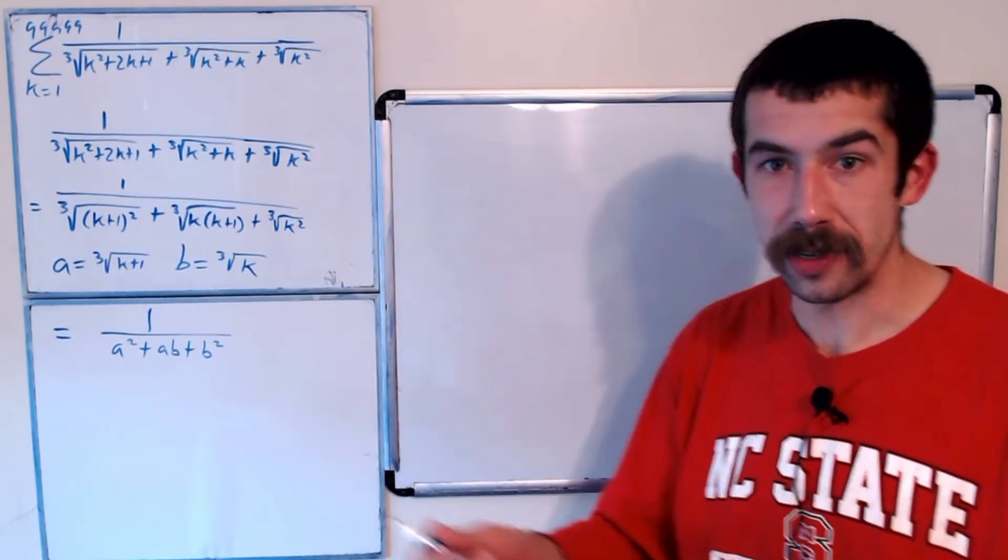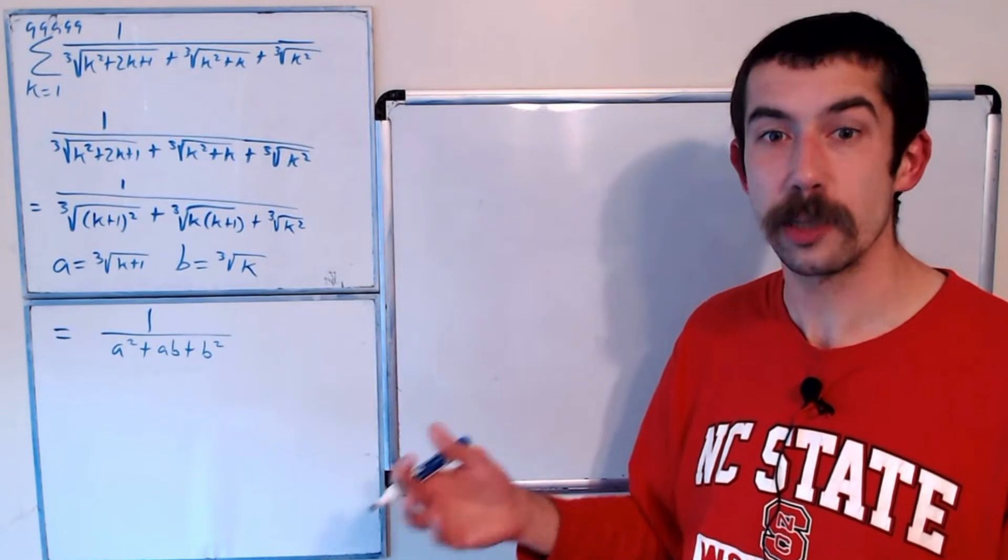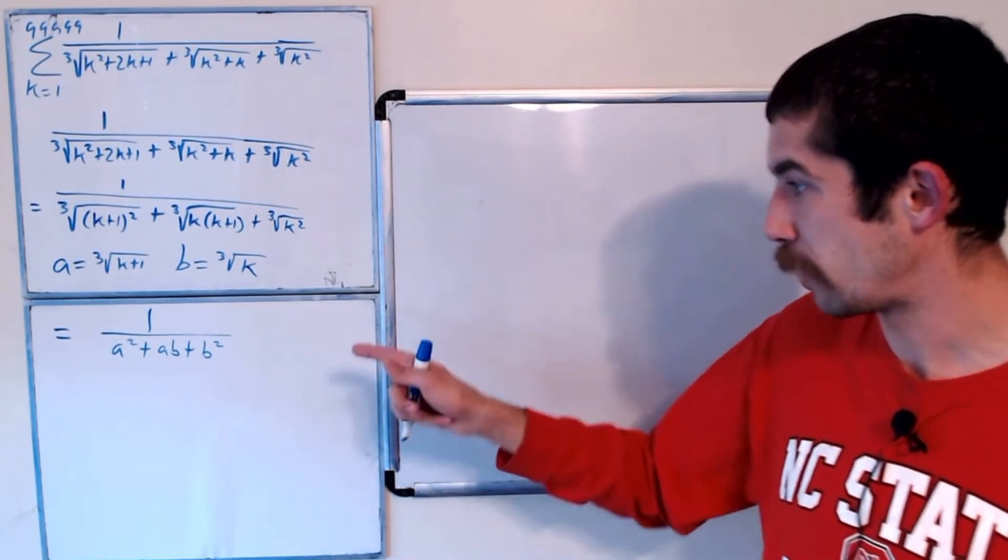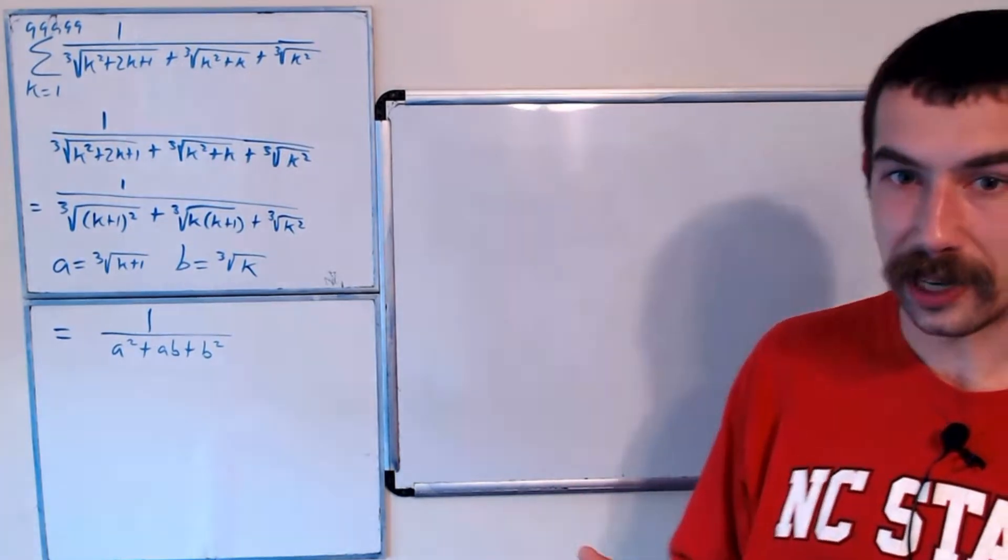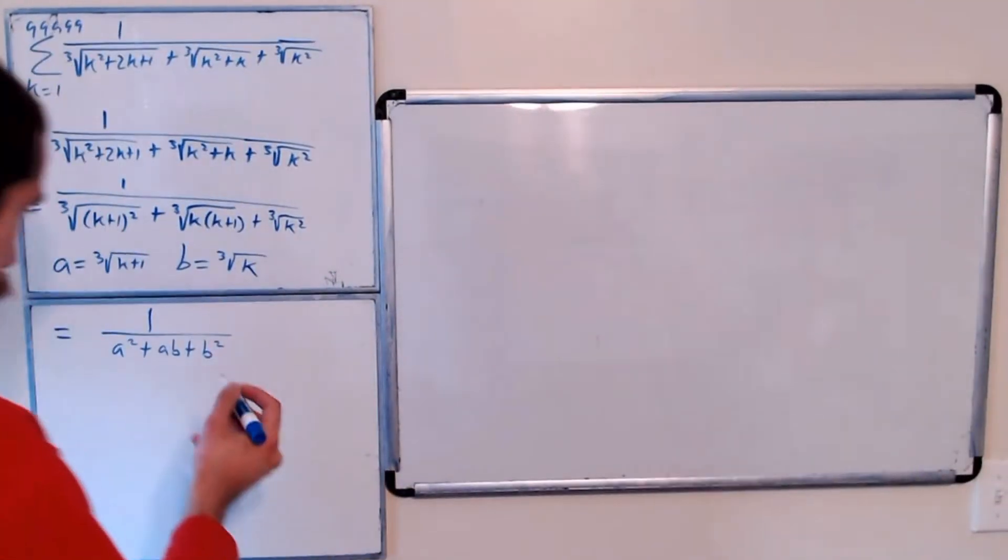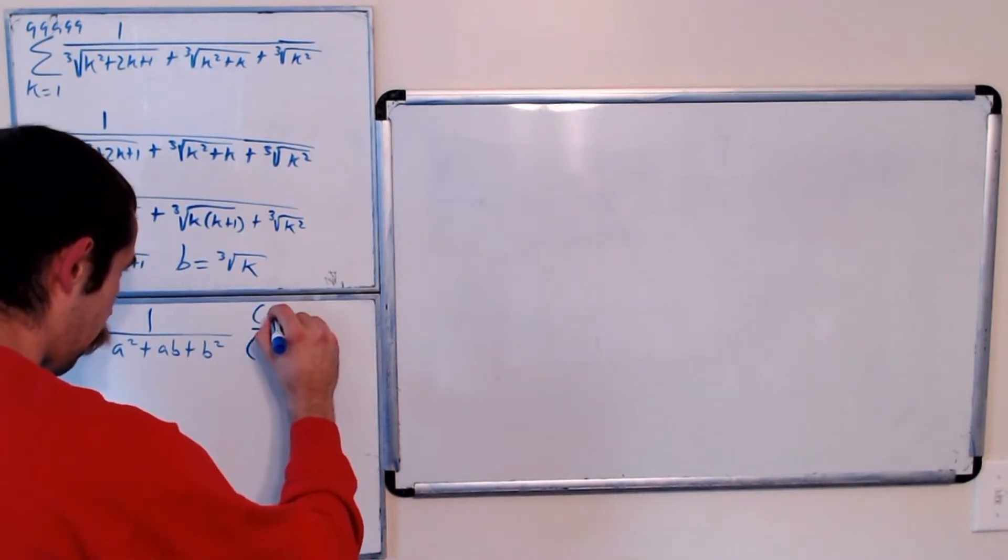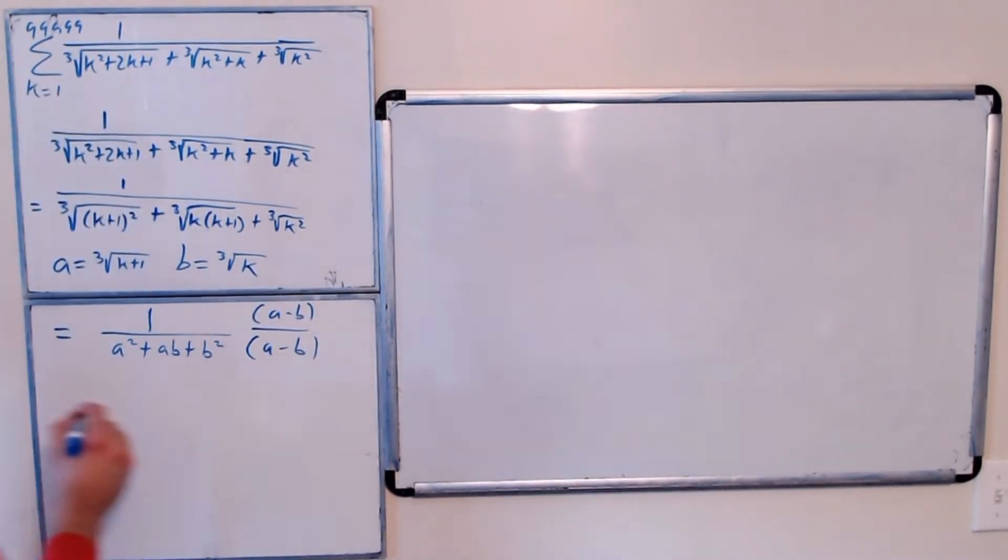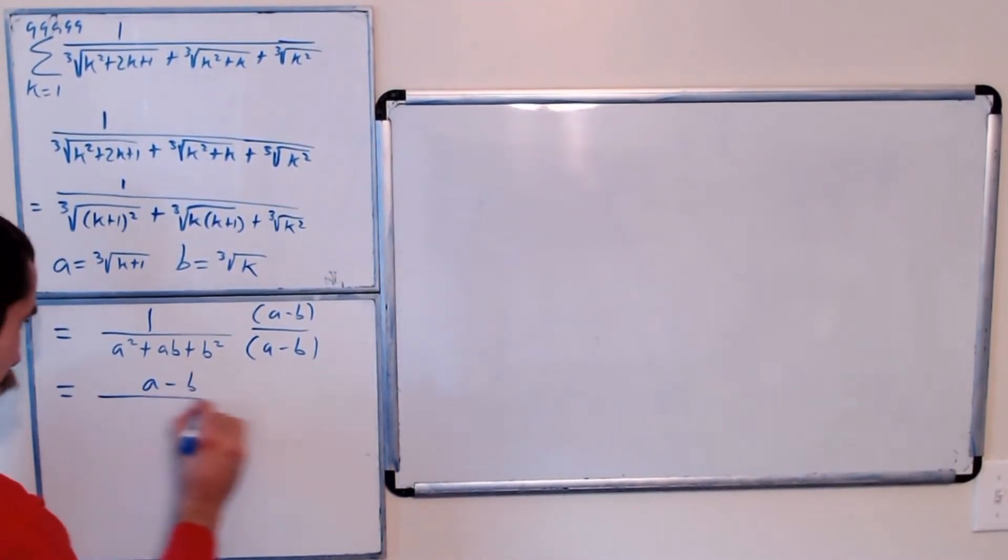This is what happens if you take a to the third minus b to the third, and factor out an a minus b. So if we multiply the numerator and denominator of this fraction by a minus b, our numerator is going to be a minus b. Our denominator will be a to the third minus b to the third.